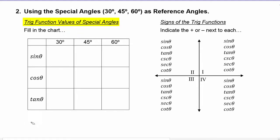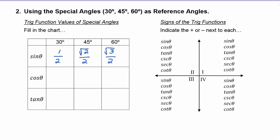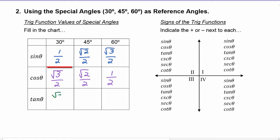We need to fill in the trig function values of the special angles. This chart is as easy as 1, 2, 3. We know we put them over 2, put in the radical over 2, put in radical 3 over 2. Then the second row becomes 3, 2, 1 — put in the radical over 2, radical over 2, over 2. For the third row, you can see the fraction bar between the first two rows. 1 over radical 3 would be radical 3 over 3. Radical 2 over 2 over itself is 1. And radical 3 over 2 over a half — the twos cancel and we get radical 3.